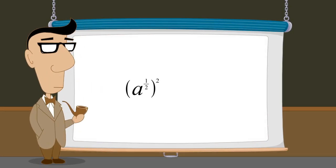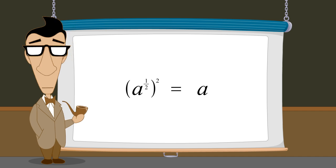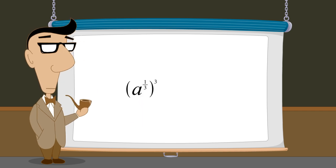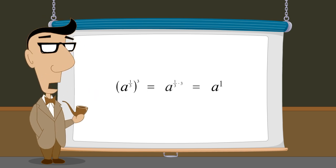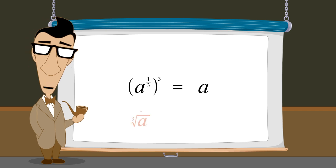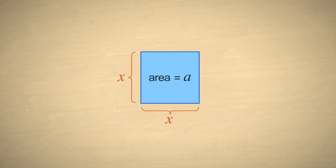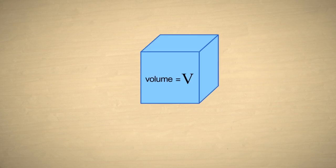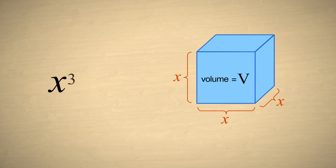We saw that if we square a to the one-half, we get a. We therefore deduce that a to the one-half is the square root of a. Likewise, if we cube a to the one-third, multiplying the exponents, we also get a to the first power, or a. Therefore, a to the one-third must be the cube root of a. Just like square roots, cube roots can be thought of geometrically. If you want to construct a cube with the volume v, you need to know what length to make the sides. We know that the length x, cubed, is equal to the volume v, so we want to find the value of x that, when cubed, gives us v. In other words, we want to find the cube root of v.